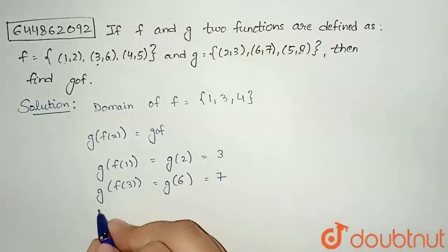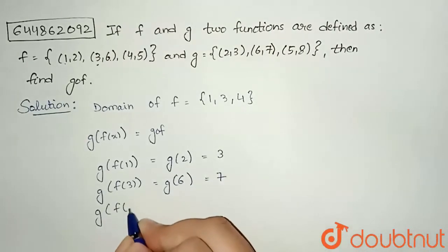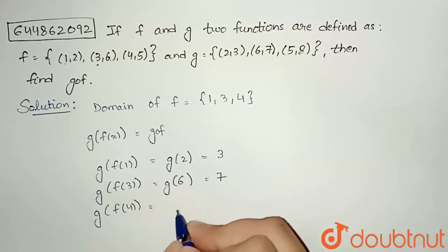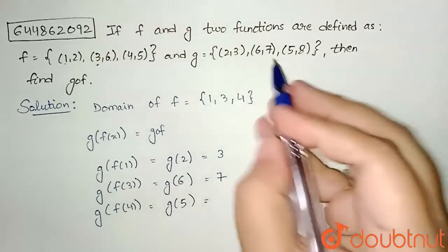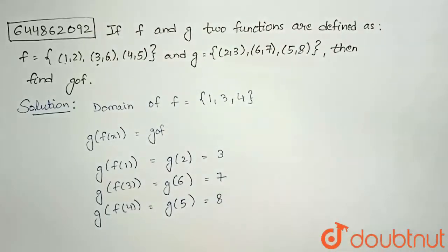Now I will find for the third one, g of f of 4. So f of 4 is 5, that means g of 5. And g of 5 is 8, so 8.